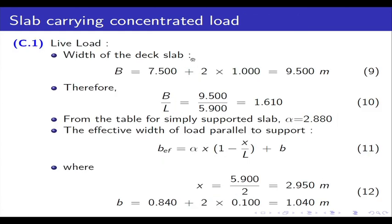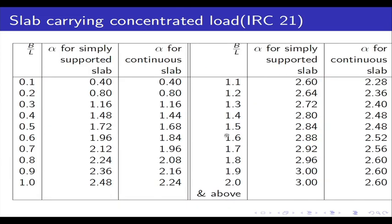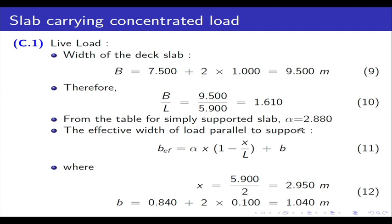The width of the deck slab is carriageway plus 2 × 1 meter footpath, giving 9.5 meters. One question about the crash barrier: that is not included here; it is required from a safety point of view but separate. So B/L = 9.5 / 5.9 (effective span) = 1.61. From the table for a simply supported slab, α = 2.88, taken at 1.6 from the table.